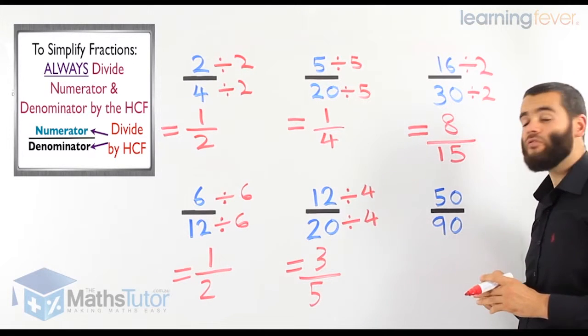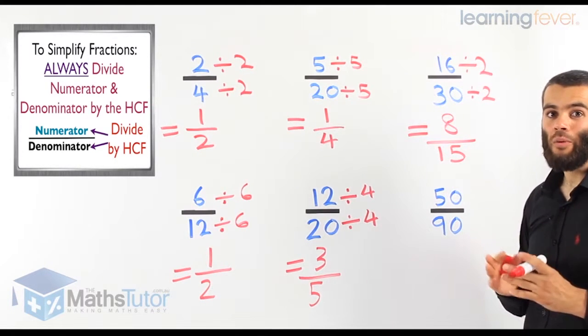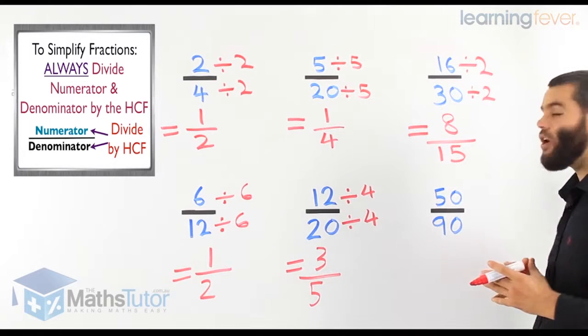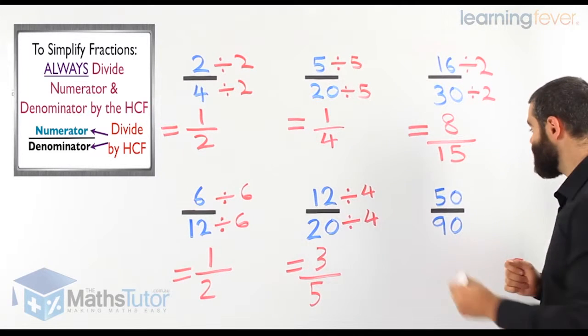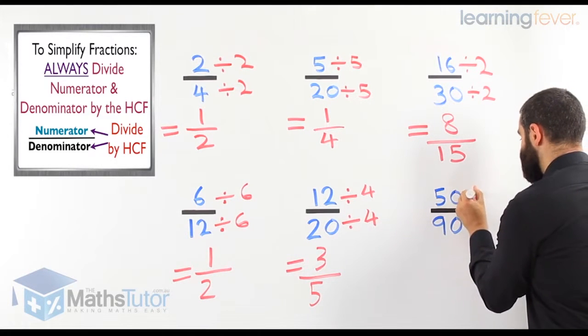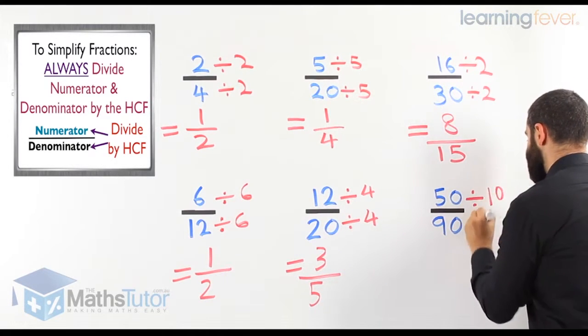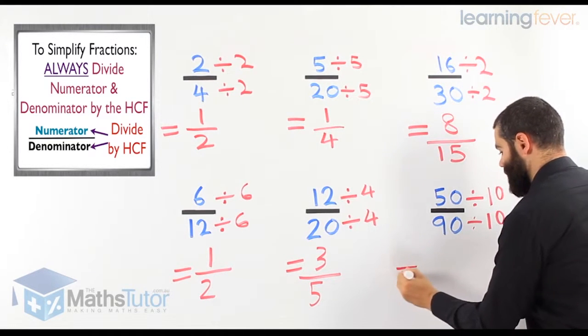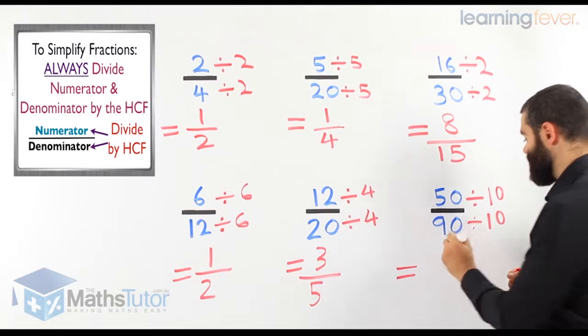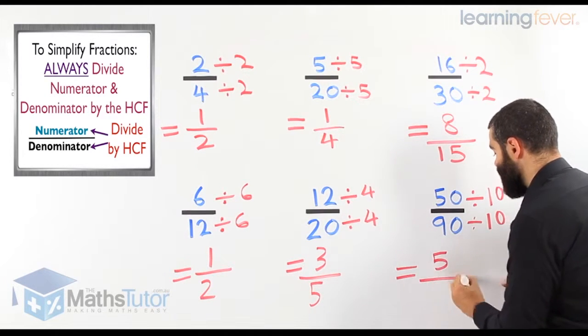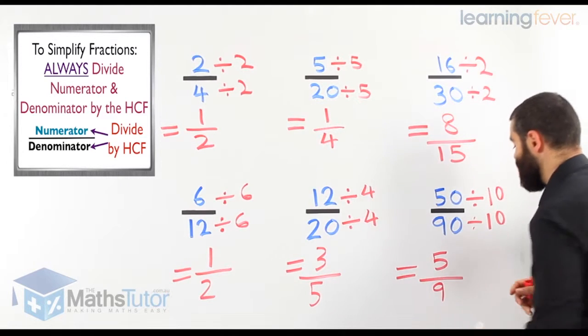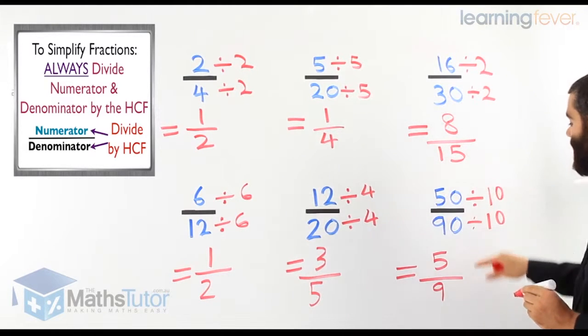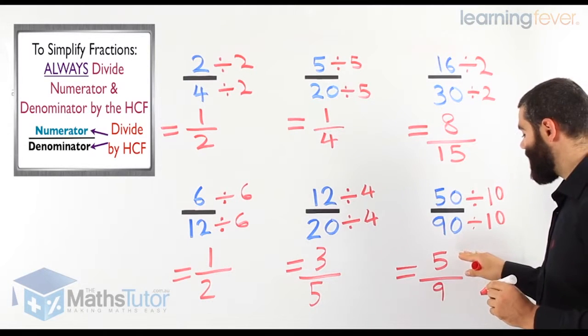Last one, 50 over 90. We need to simplify that. 50 over 90. What is the highest common factor between 50 and 90? The HCF is going to be 10. So 50 divided by 10 is 5. And 90 divided by 10 is 9. So 50 over 90 simplified is 5 over 9.